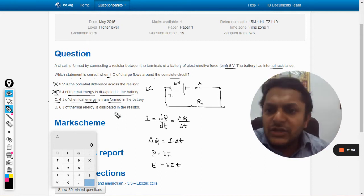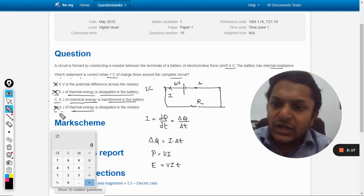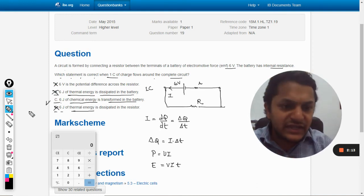And what is the D option? Six joule of thermal energy. Again, D option is wrong. So by the exclusion principle, we get that the answer should be C.